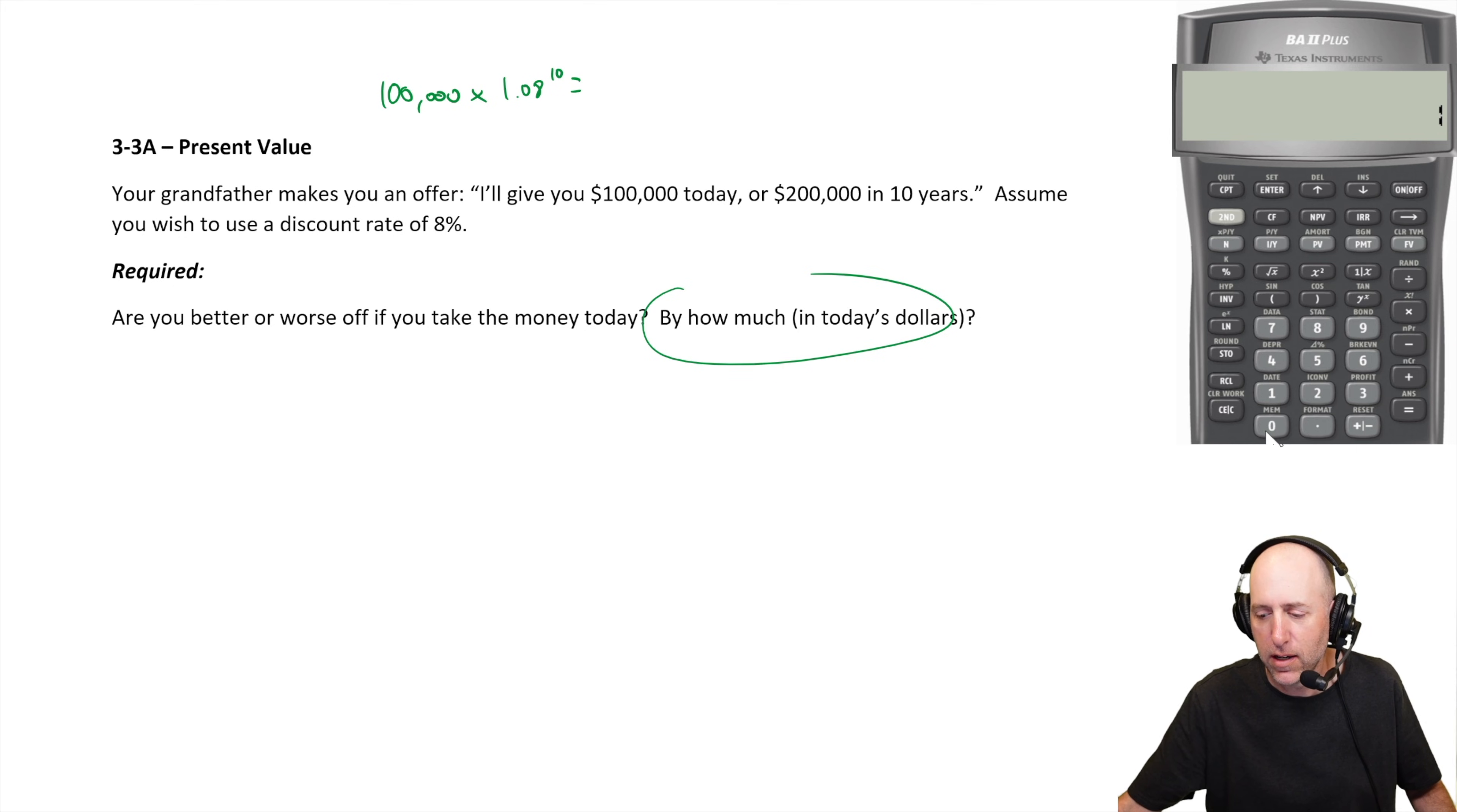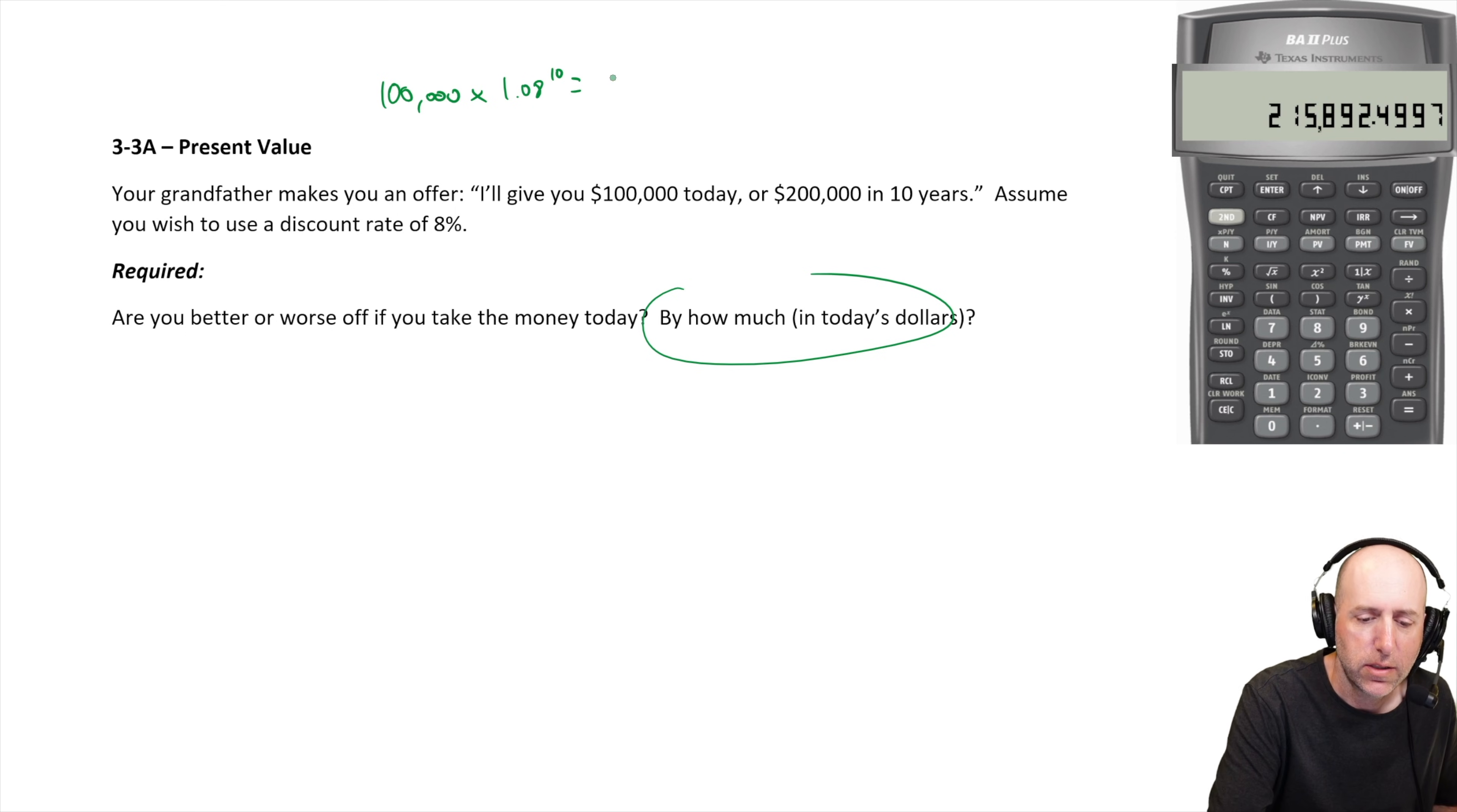and I can say $100,000 today times 1.08 raised to the power of 10 times 100,000. You can see I make $215,892.50.